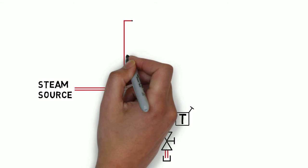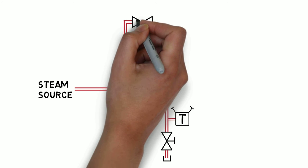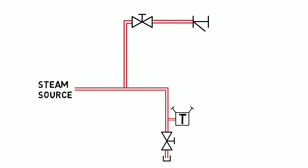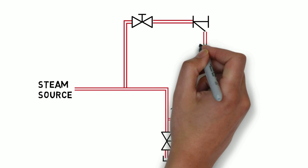Pipe off the top of the steam line to avoid condensate. This leads through an isolation valve and is then piped to a strainer. The strainer has a blowdown valve.